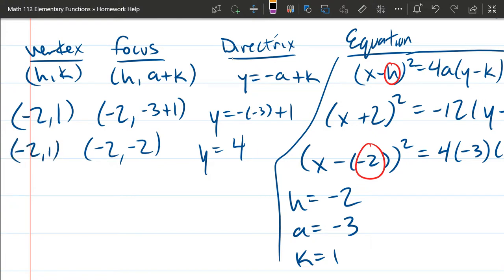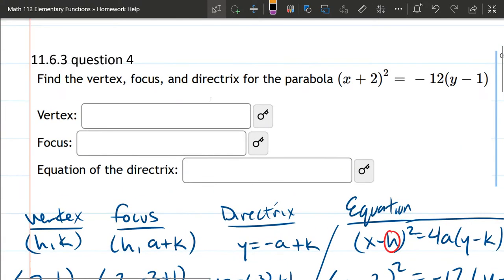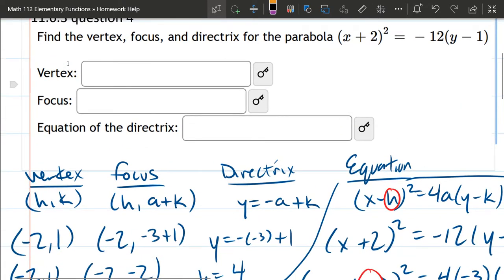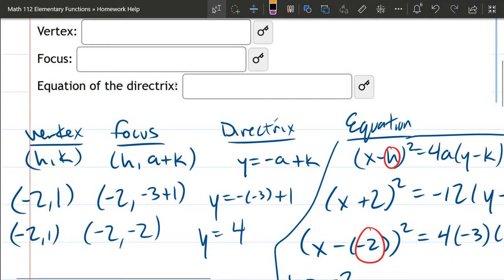So there's all three pieces: vertex, focus, directrix, and you can take those and boom, put them in right there. So it's just super important to know your form. And of course, this one's tricky, so I recommend go to the cheat sheet. It'll be a lot more straightforward where everything comes from.